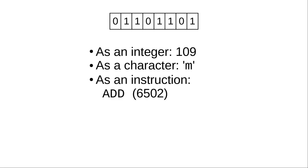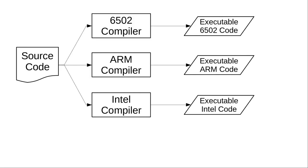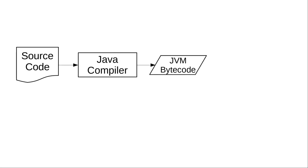Every different type of CPU has a different instruction set or architecture. That means this pattern of bits — which is an add on a 6502 — might mean jump to a different part of the program on an ARM processor, or load an accumulator on an Intel processor. When we write a program in a high-level language, it has to be translated into the bits and bytes for the CPU that's going to run the program. That translation process is called compiling, and for most languages, you need a different compiler for every architecture. The people who developed Java took a different and interesting approach: instead of multiple versions of the compiler, there's one compiler that compiles to bytecode — the instruction set for an idealized machine whose architecture is optimized for Java programs.